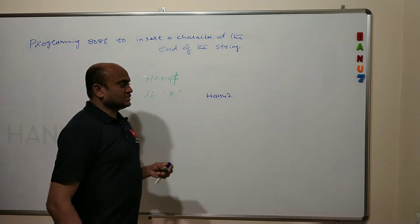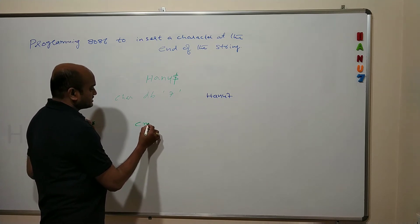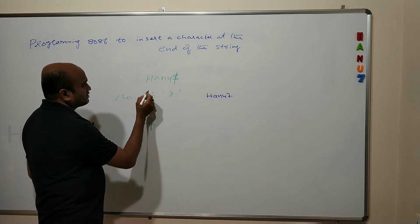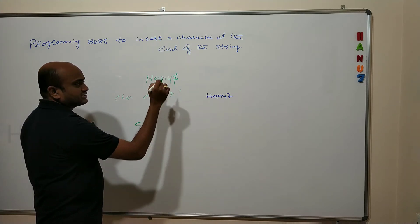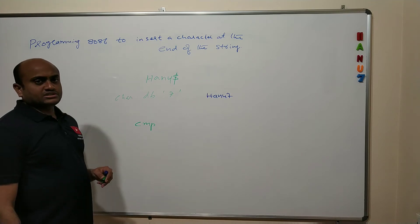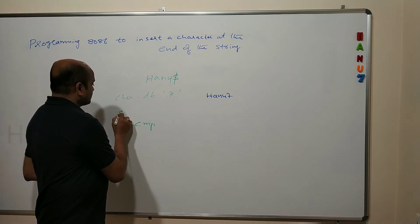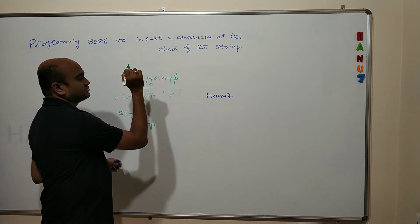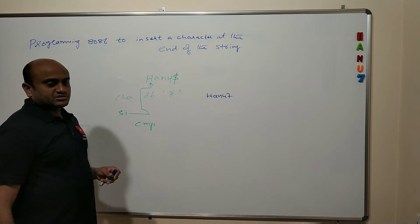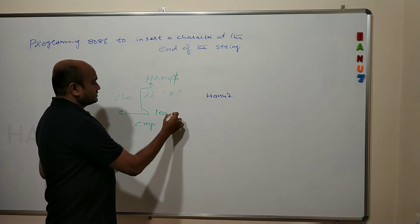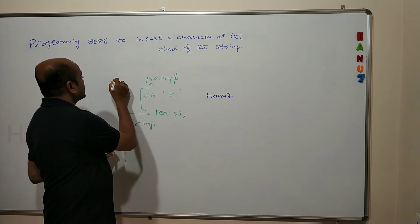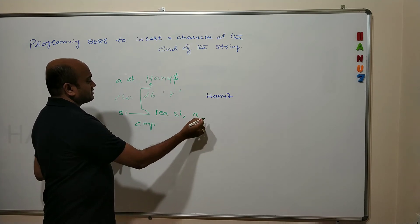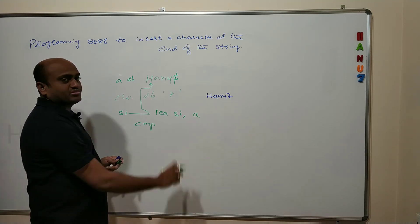In the code segment, I use the CMP instruction to compare the dollar special character with each character in the input string. For that, I take register SI and make it a pointer to the input string. Using the instruction LEA SI, comma string-name — for example, if the string name is A, I write LEA SI comma A — then SI acts as a pointer to the input string.